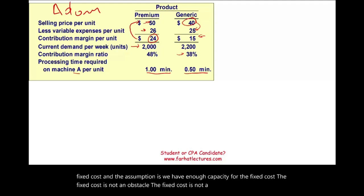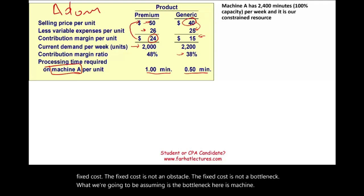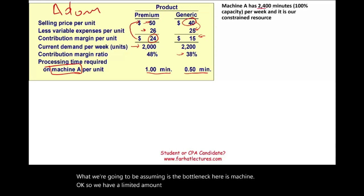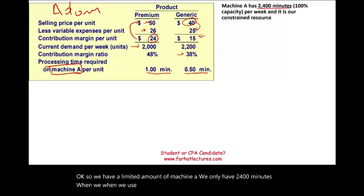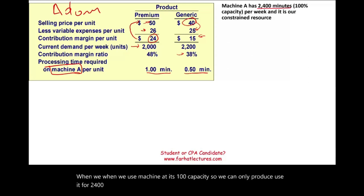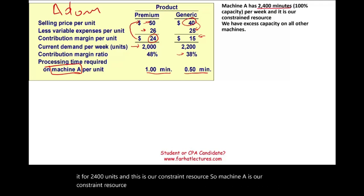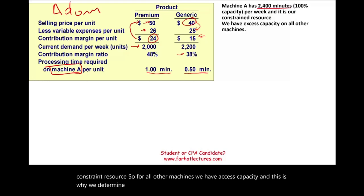For the generic unit, each unit sells for $40, variable expenses are $25, giving a contribution margin of $15. Demand is 2,200 units per week, the contribution margin ratio is 38%, and it takes half a minute on machine A to produce. The bottleneck here is machine A — we only have 2,400 minutes of capacity on machine A per week. All other machines have excess capacity.